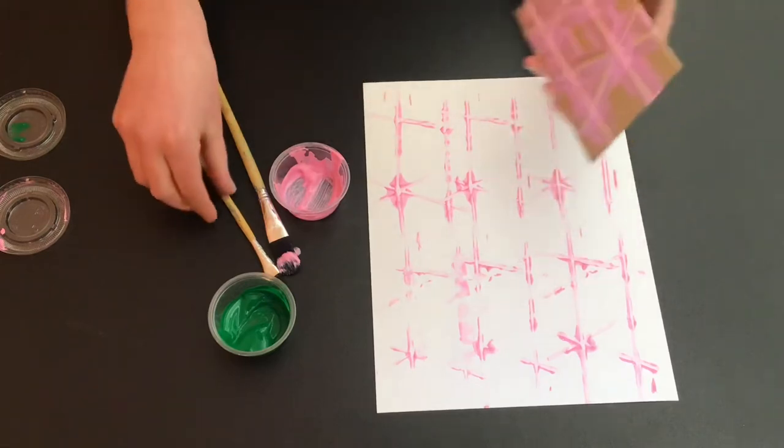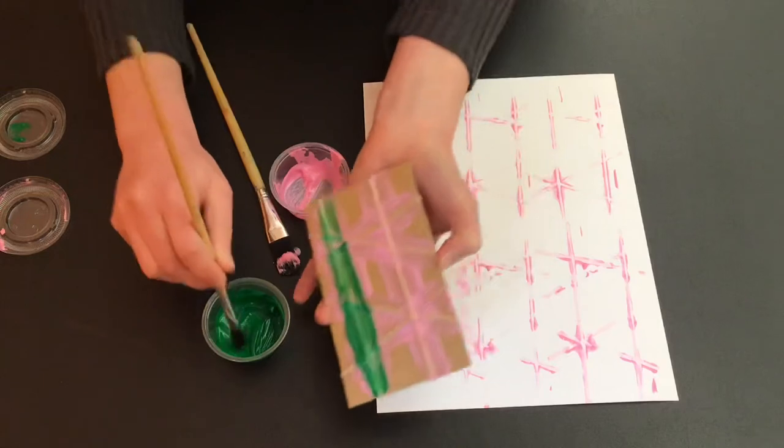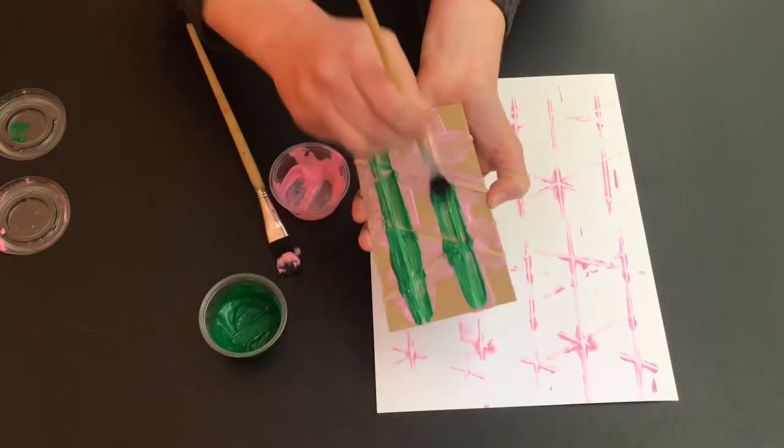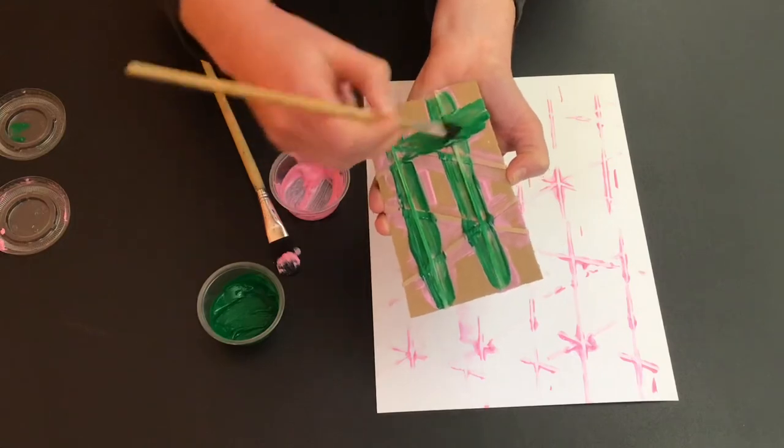Now it's time to add some green, and I'm just going to put it right on top so I'll have a little bit of color mixing happening. You can use your rubber band print as many times as you can.